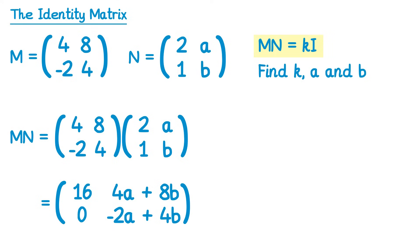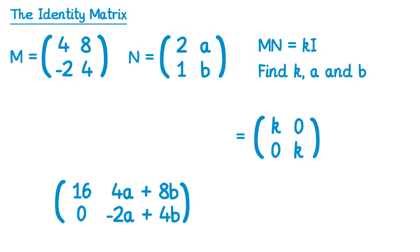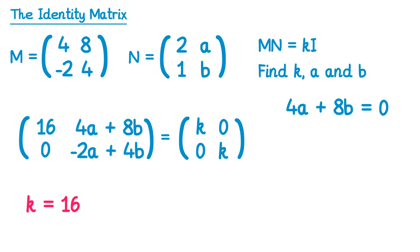Now for the matrix k times I — we saw that k I is just k's on the diagonal and zeros everywhere else. So we have the matrix MN and the matrix kI, and we're told they're equal. Comparing elements: the top left elements are sixteen and k, so k equals sixteen. The top right gives four a plus eight b equals zero. The bottom left gives zero equals zero, which isn't helpful. The bottom right gives negative two a plus four b equals k, and since k is sixteen, that's negative two a plus four b equals sixteen.